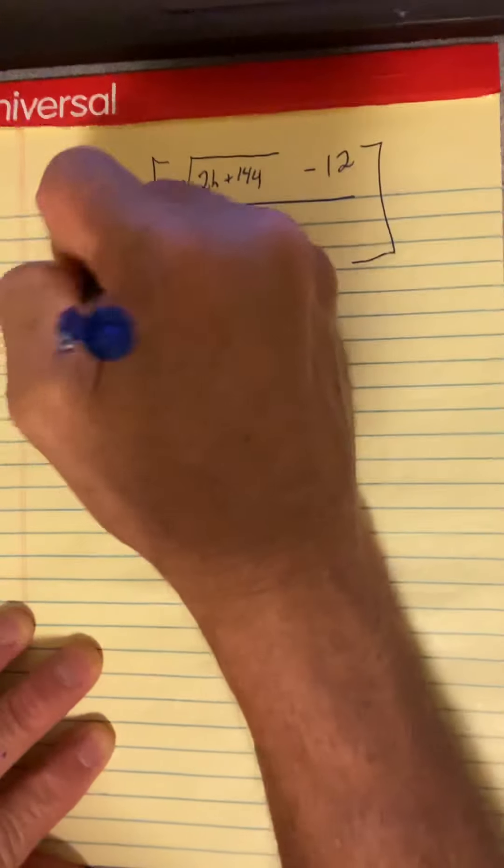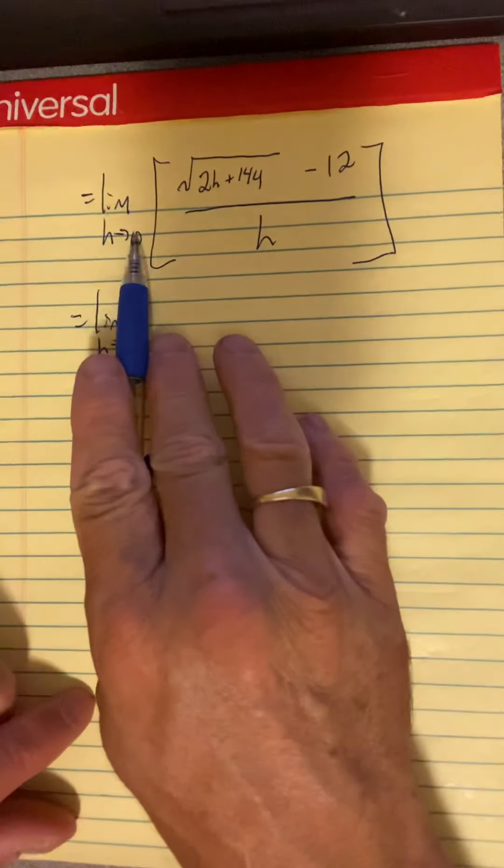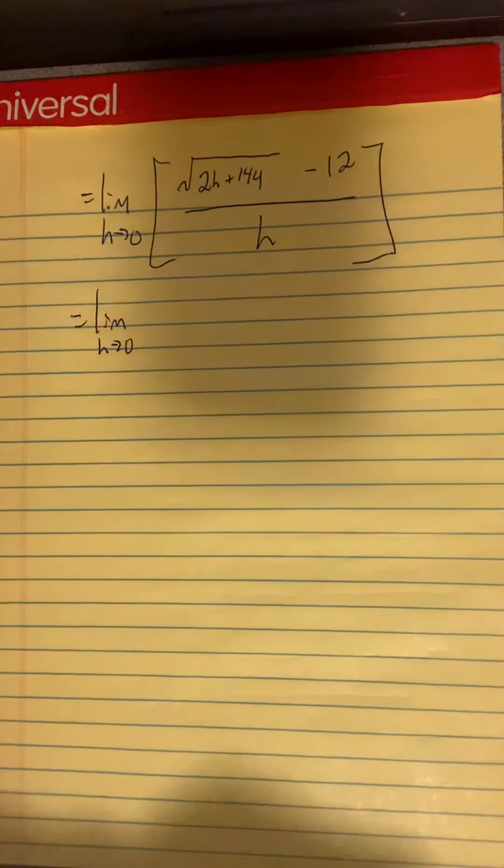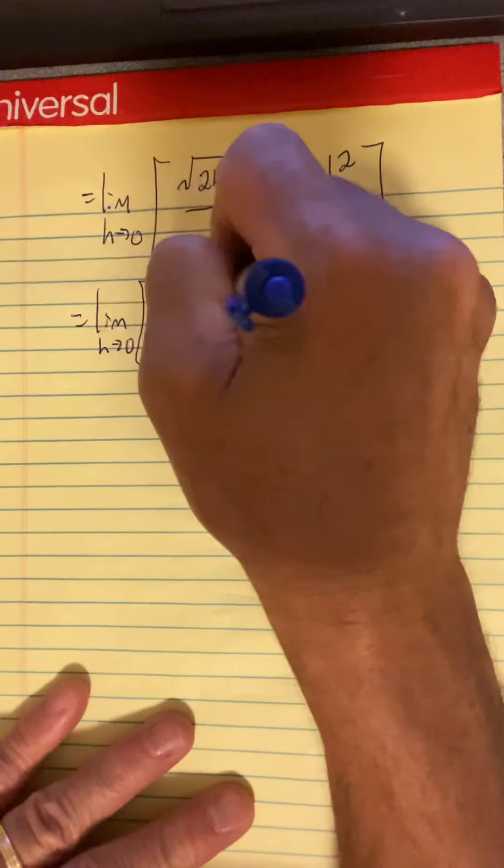Now how are we going to get out of this? How are we going to get this limit? We can't direct substitute. If I direct substitute zero for h, I've got zero on the bottom. So this expression is undefined at h. So direct substitution doesn't work.